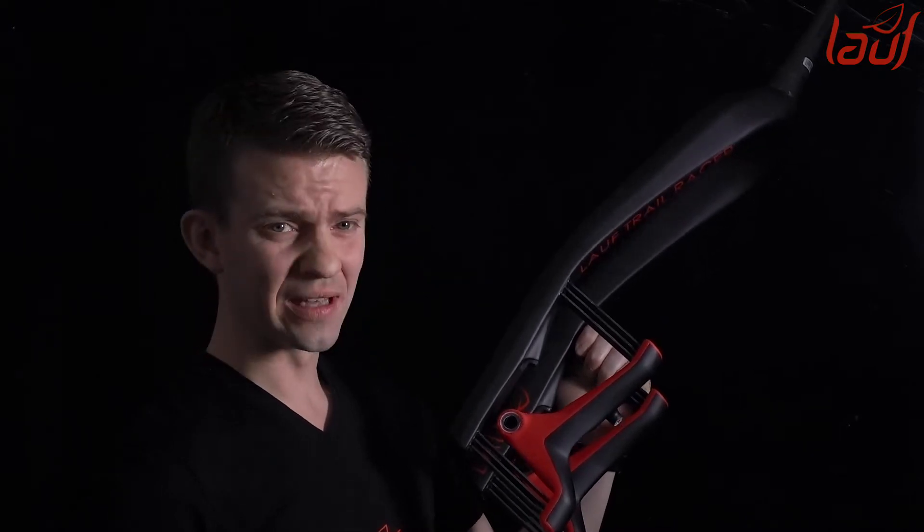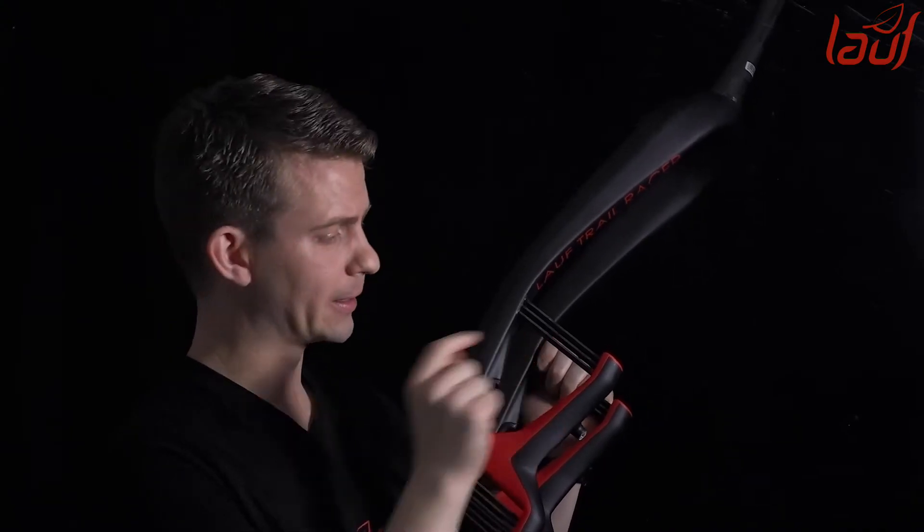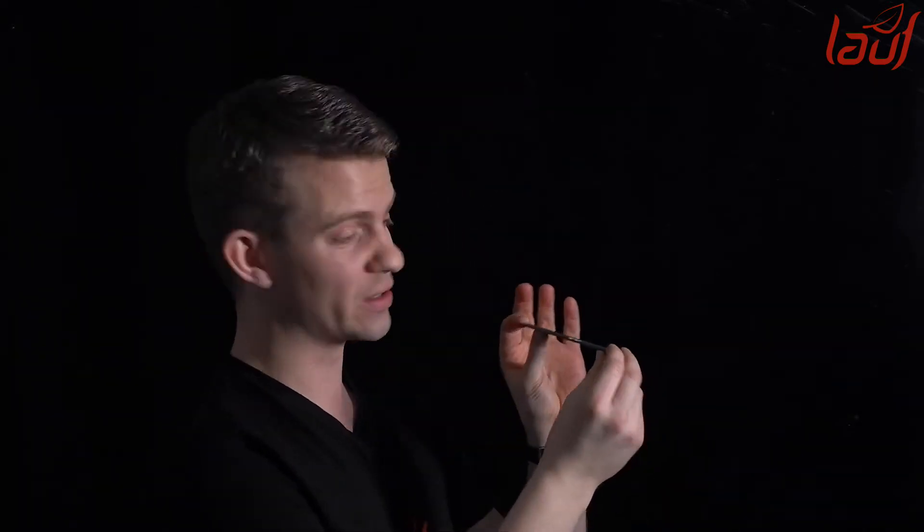Well, to understand this, first we need to understand just a single leaf spring, one of these here. Here I have a single spring from TR Boost's cross-country fork. We need to understand the properties of a single spring before we start putting many of them together to make them work together. First we need to know the individual players of the team before we assemble the team.